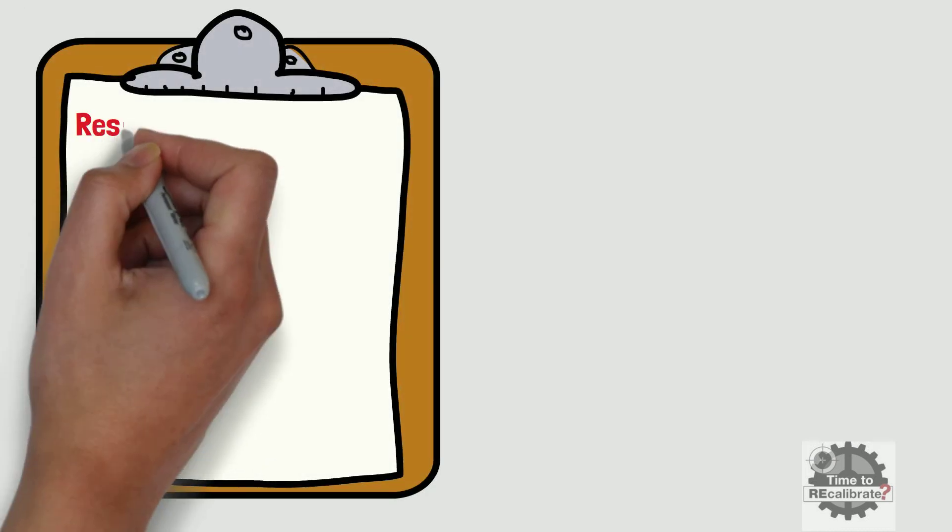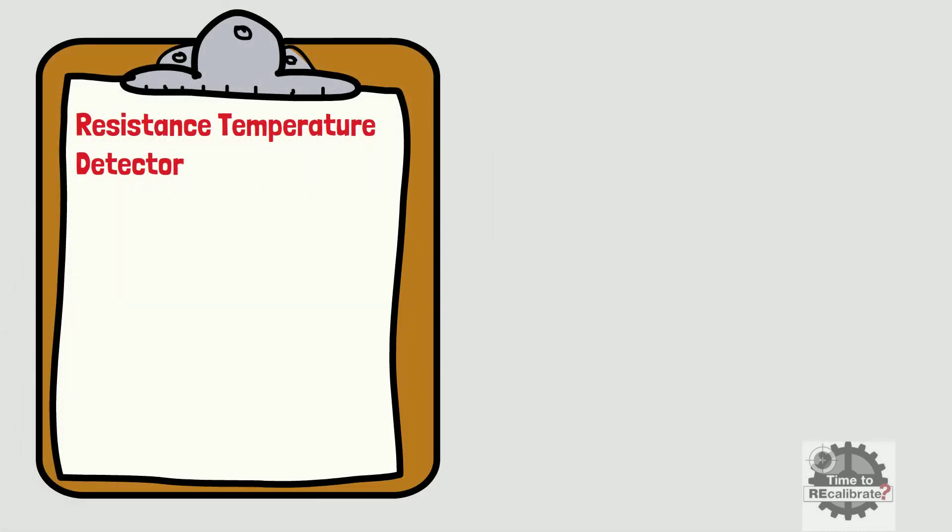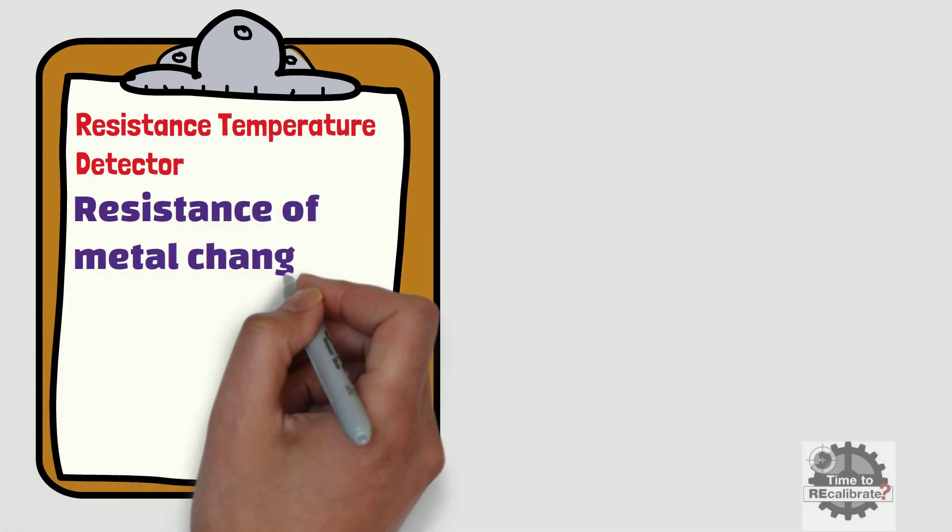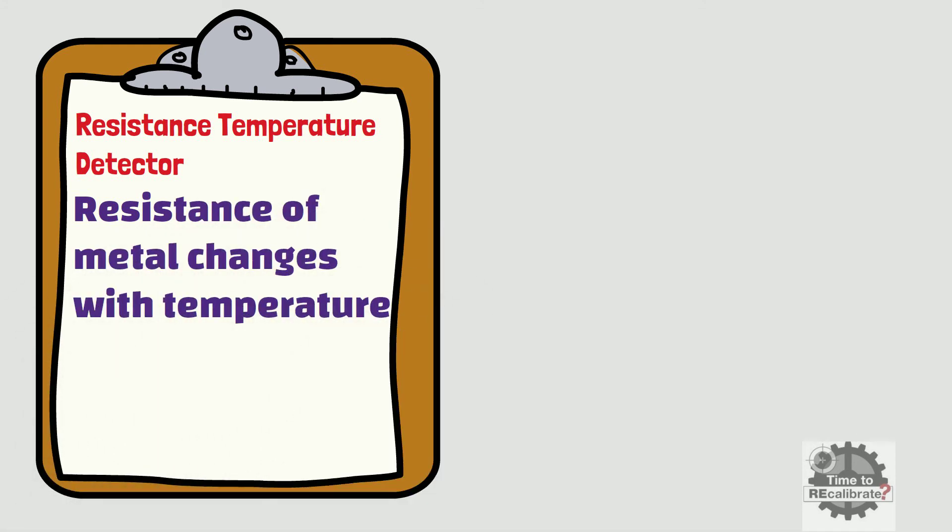The second type is resistance temperature detector. It is a temperature sensor which measures temperature using the principle that the resistance of metal changes with temperature. In other words, electrical resistance of certain metals increases and decreases in a predictable manner as temperature changes. This means RTD has a positive temperature coefficient.